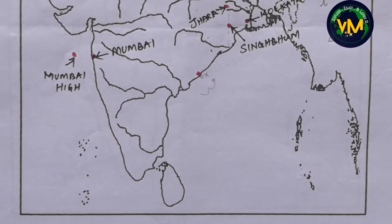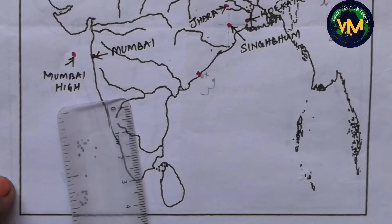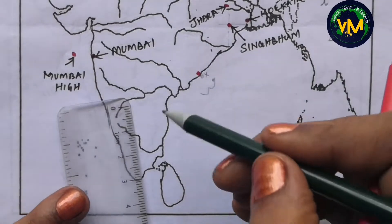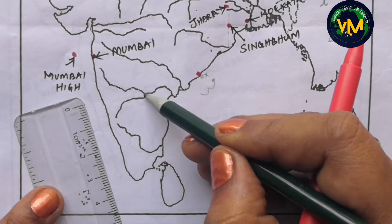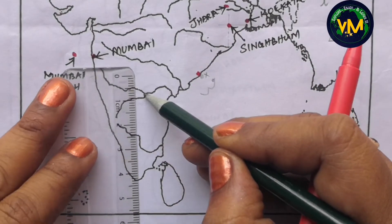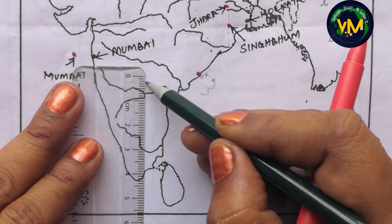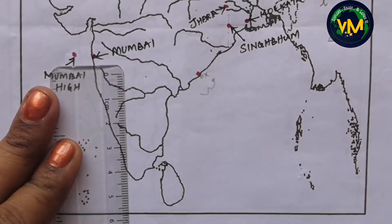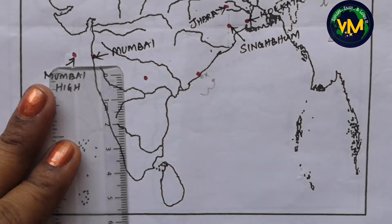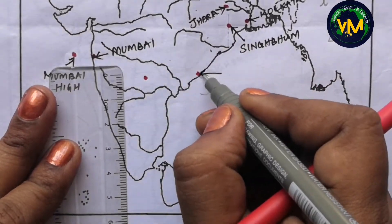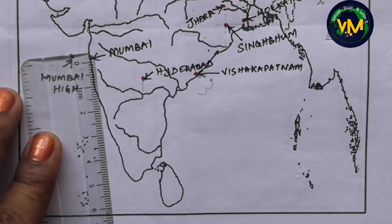Then we have Hyderabad. For drawing Hyderabad, again take your scale. This is the confluence of River Krishna and Tungabhadra. From the confluence, you take 0.7 centimeters — this is Hyderabad.